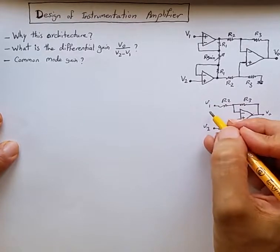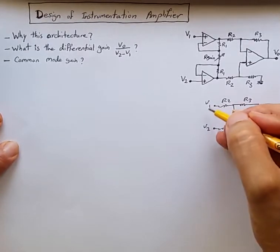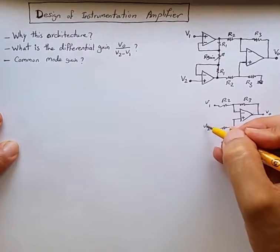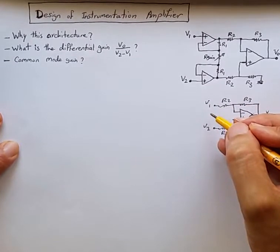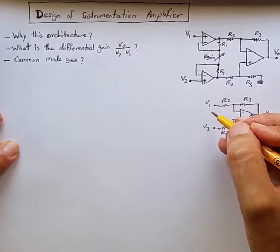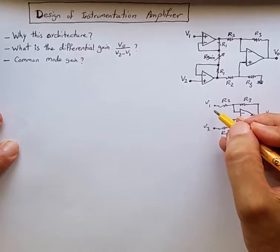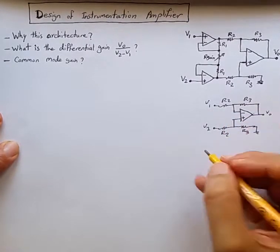We are interested to either impedance match with input voltages V1 and V2 or have them buffered so that they deal with very large impedances and don't need to provide any current to the differential amplifier.